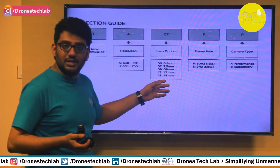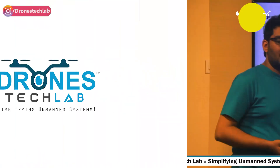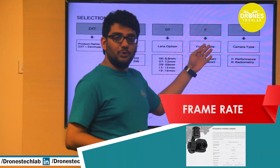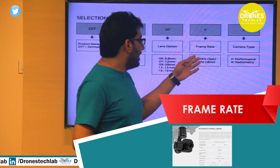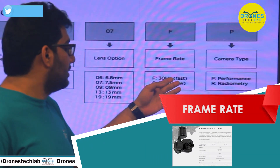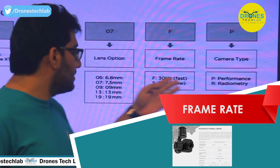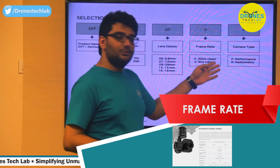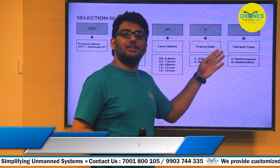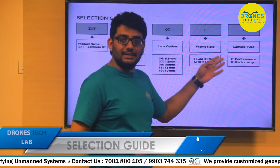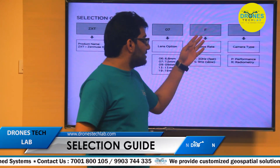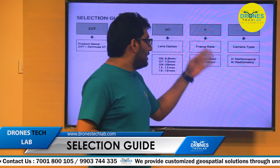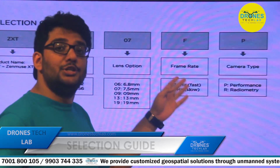As you can see, the most widely used lenses are the 13mm and 19mm. The seventh character stands for the frame rate, which has two types: 'F' for 30Hz (fast) and 'S' for 9Hz (slow). The fast and slow designation doesn't affect image quality — it only indicates pictures taken per second.